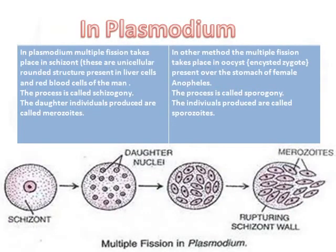In plasmodium, multiple fission may take place in the schizont forming merozoites, or in the oocyte forming sporozoites. Again, both structures give rise to small plasmodium.